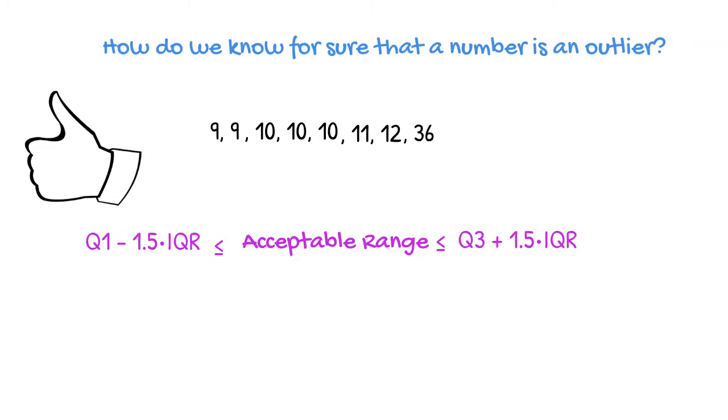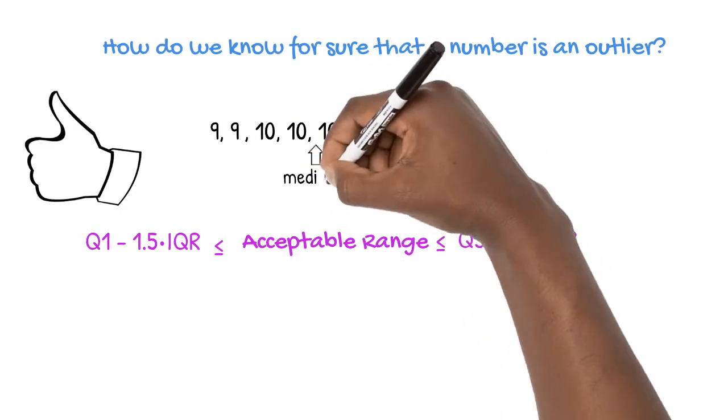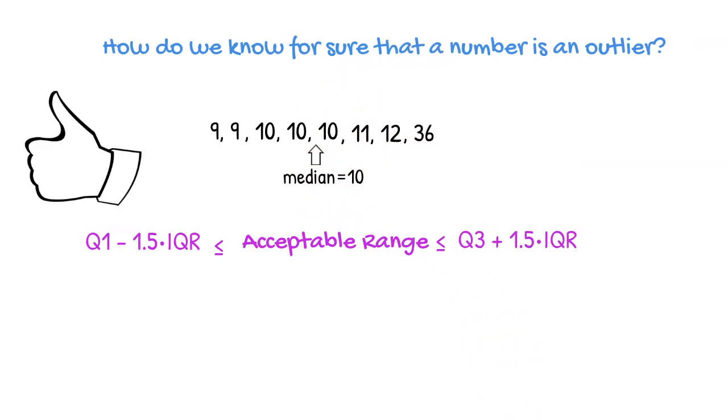Let's find our quartiles and interquartile range. To find the quartiles, we first need to locate the middle of our data after making sure our numbers are arranged in order.